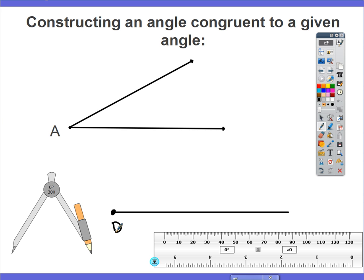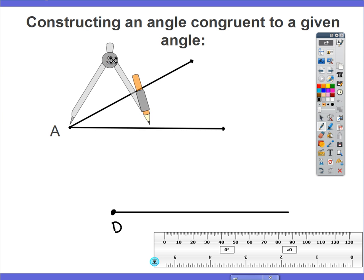Go ahead then and place the compass on point A. Take the point of the compass and put it on point A. And stretch the compass to any length so as long as it stays on the angle. So as I stretch my compass out or in, as long as I can draw an arc that's going to cross both rays of my angle, that's good for us.